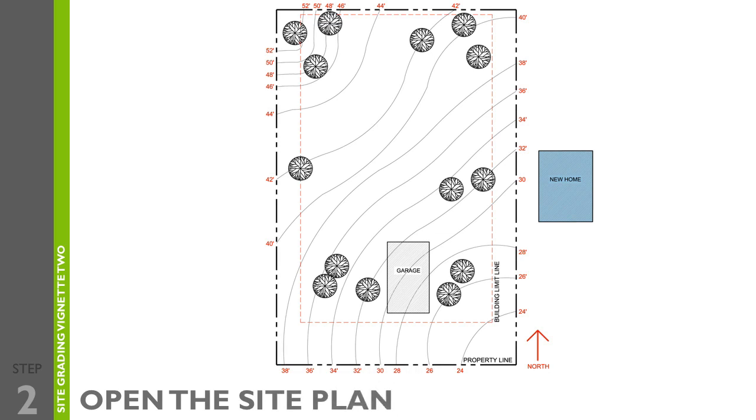For step two, open the site plan and review all the important features, such as contour intervals, locations of any elements that need to be protected, and the direction of the slope. Make sure you note these items in your note chart on your scrap paper.